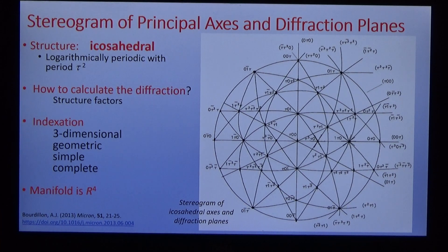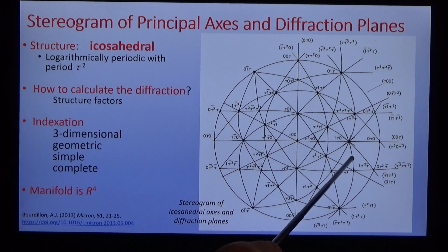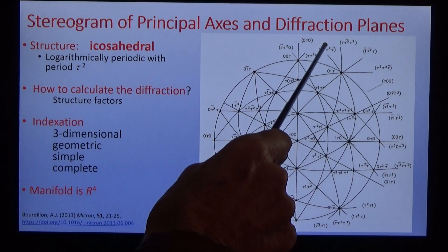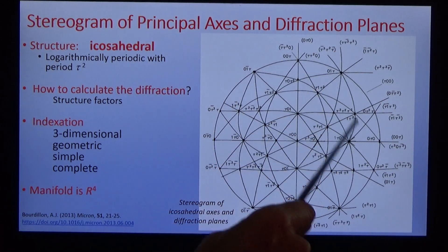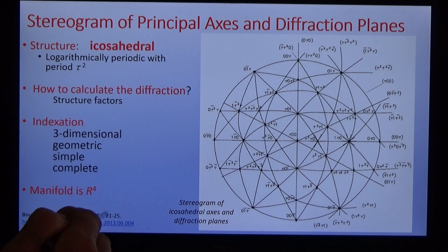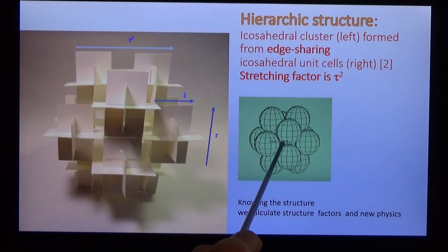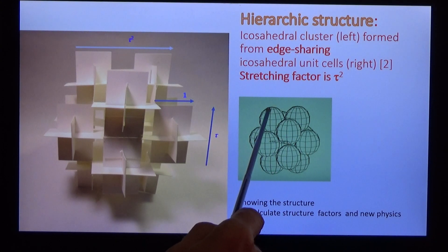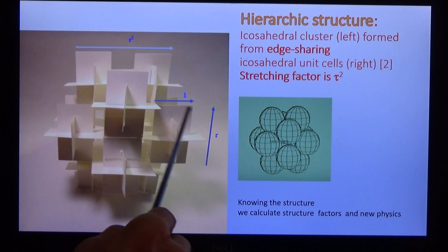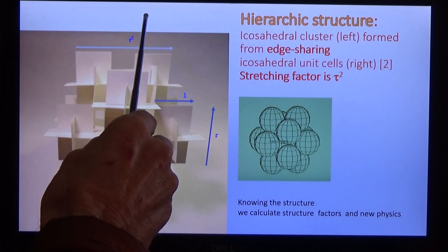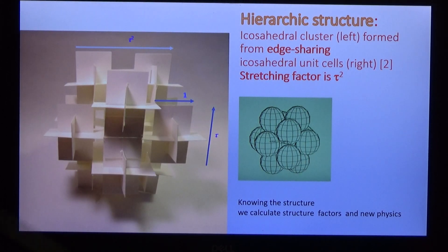To calculate the structure factors, we have to have a model for the structure. The diffraction pattern is icosahedral. So the structure must be icosahedral. And here's a stereogram of the principal axes of the icosahedral structure and normal to the principal axes, the diffraction planes. They're all three-dimensional, geometric, simple and complete. Dimensions should not be multiplied without necessity. The manifold is R4, including time. The unit cell is extremely dense. Manganese at the centre, surrounded by 12 atoms. It's edge-sharing. Notice that the unit edge width of the unit icosahedral cell stretches to tau squared in the icosahedral cluster. And in the supercluster, tau to the fourth, tau to the sixth, tau to the eighth, infinitely extensible, uniquely aligned, uniquely icosahedral.